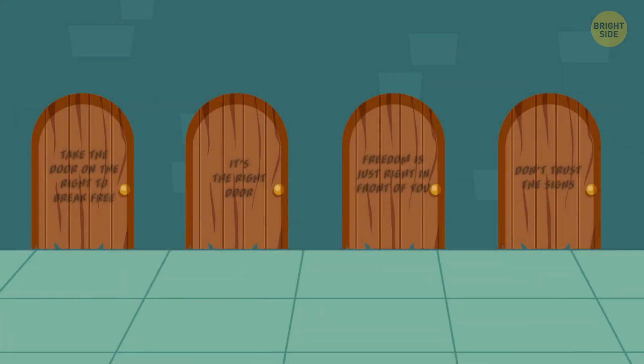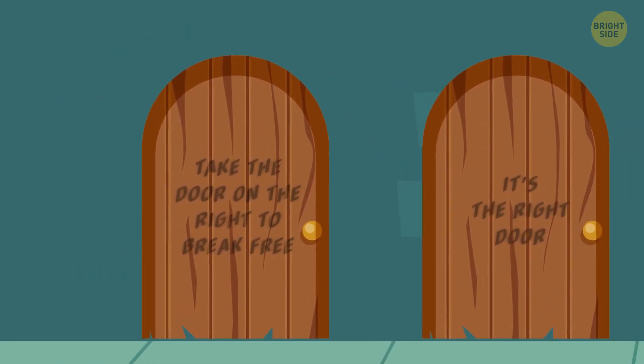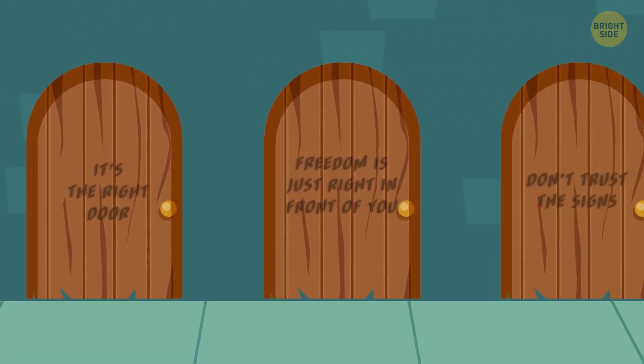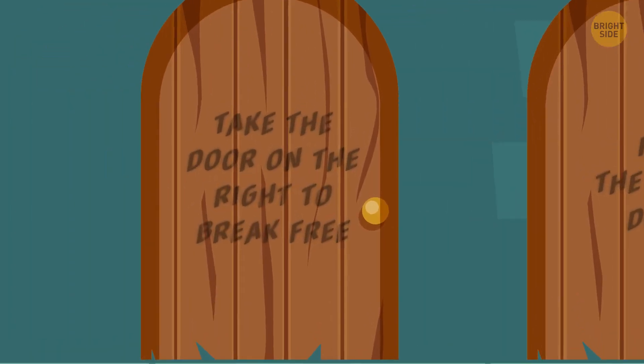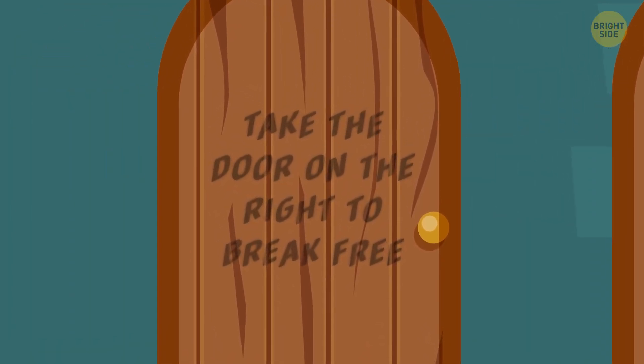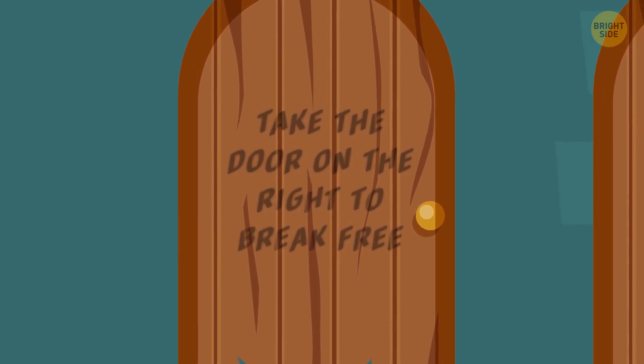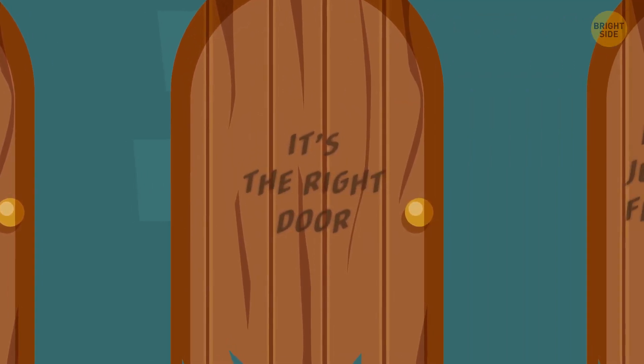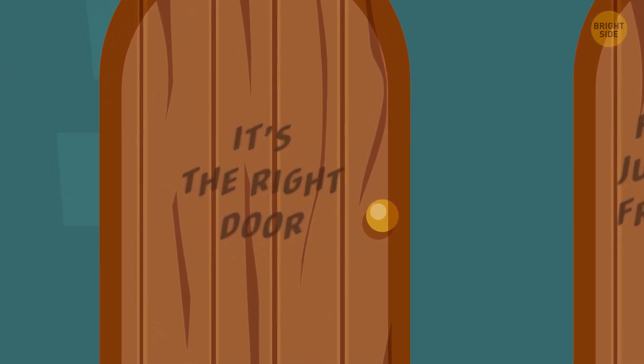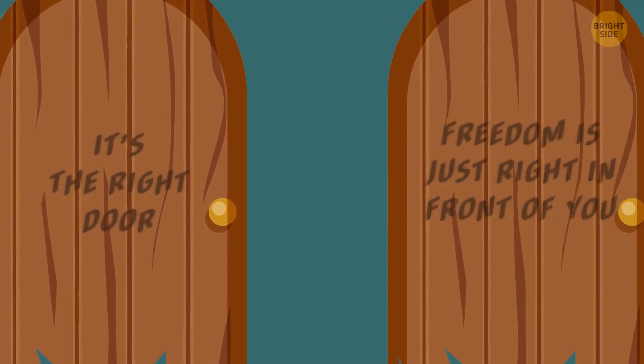You wake up and find yourself trapped in a room with four doors in front of you. You don't have enough time to choose which door leads to freedom. You hear a monster coming, so you check out the doors quickly. The leftmost door has a sign on it saying, take the door on the right to break free. The second door also has a sign saying, it's the right door.